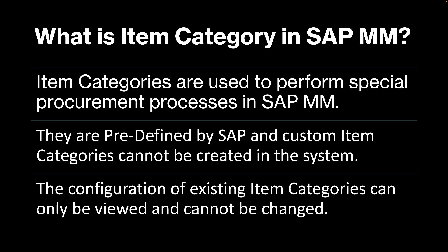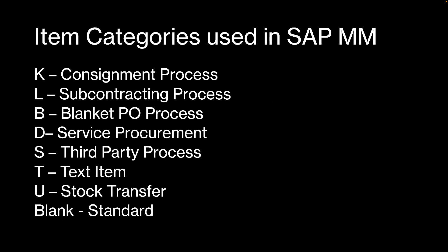Also, the configurations which are there behind the item categories, we can only view those configurations. We cannot make any changes to those configurations — we can only view them to understand how these item categories are behaving in the background. You can see on the screen these are some of the common item categories which are used in SAP MM. Some of these processes we have already discussed on our channel — you can see the playlist in the description.